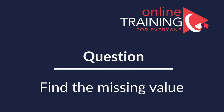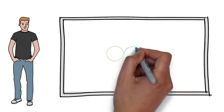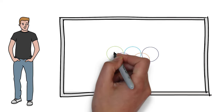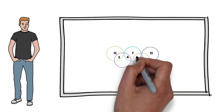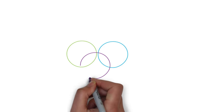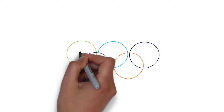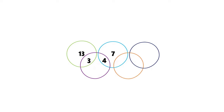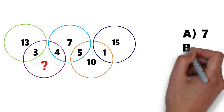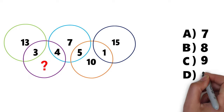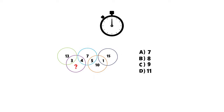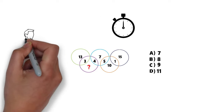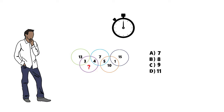Here's a frequently used favorite question. You're presented with five crossing circles of different colors, with numbers inside and at intersections: 13, 3, 4, 7, 5, 10, 1, 15, and one missing number marked with a question mark. Choices: A: 7, B: 8, C: 9, D: 11. The sum of numbers in each circle is the key — analyze the relationship between the numbers shown.